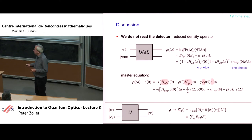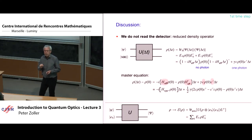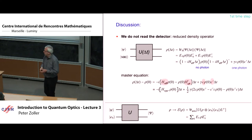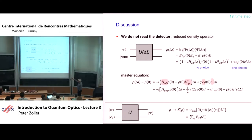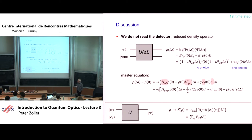This map from ρ(0) to ρ(δt) has two contributions: the no-photon contribution and the one-photon contribution. Rewriting in the second form, you will recognize this as a discretized version of the Lindblad master equation, where the quantum jump operator C appears in the Lindblad form. We get the Lindblad master equation by identifying the Kraus operators after a single step. There is a hierarchy of time scales behind this: δt is small relative to Rabi frequencies but large relative to the radiation field bandwidth.